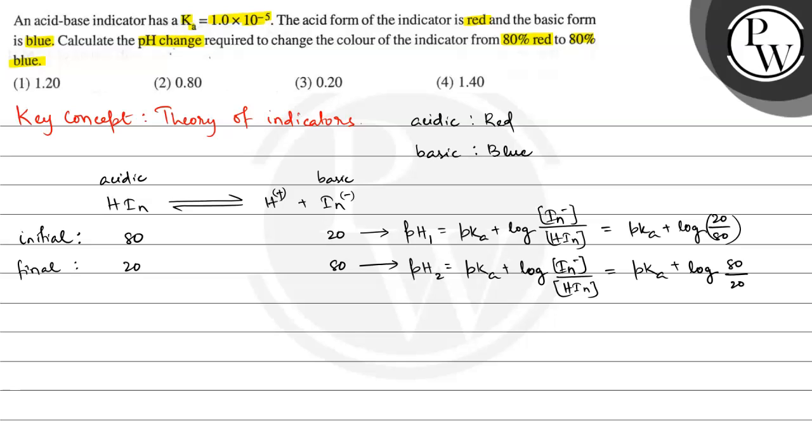Change in pH is equal to pH2 minus pH1. So pH2 value is pKa plus log 80 by 20, or we can also write it like log 4 because 80 by 20 is 4, minus pH1 that is pKa plus log 20 by 80, that means log 1 by 4.